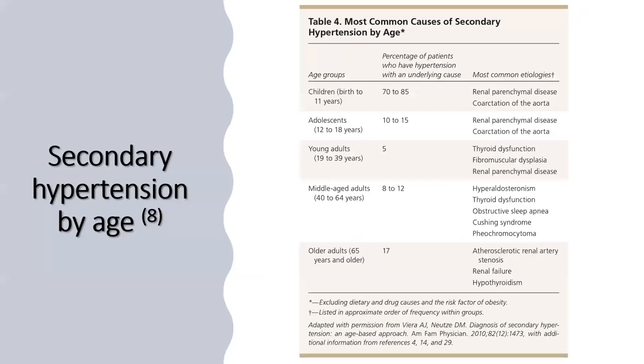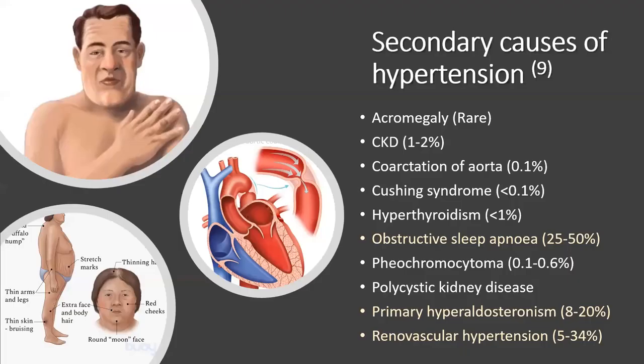Regarding secondary causes: young adults have only a 5% prevalence. The most common secondary causes are obstructive sleep apnea, primary hyperaldosteronism, and renal vascular hypertension. Coarctation, Cushing's, hyperthyroidism, pheochromocytoma, PCKD, and acromegaly are comparatively rare. At the primary level, it is more rational to order a serum electrolyte than to arrange urinary metanephrines or high-profile investigations.